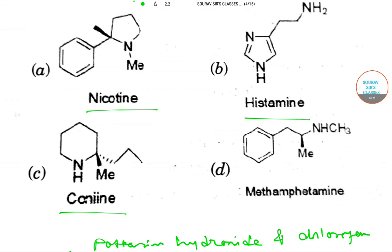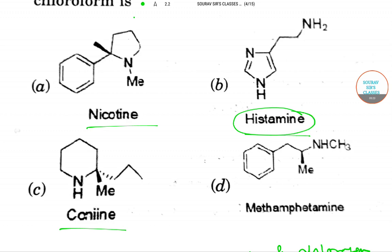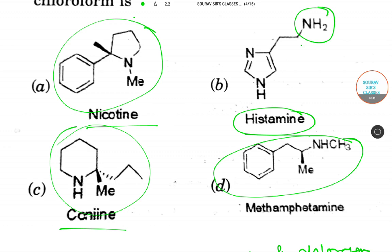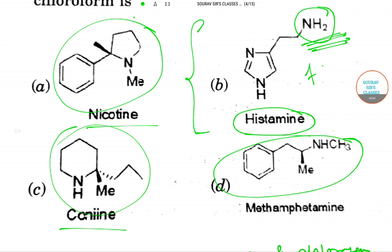In the case of histamine, there is an NH2 group. The other options do not have an NH2 group. Only histamine among the given options provides an NH2 group, and only NH2 can produce the foul smell. So option B is the correct answer.